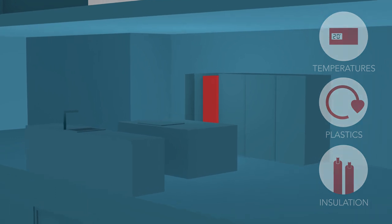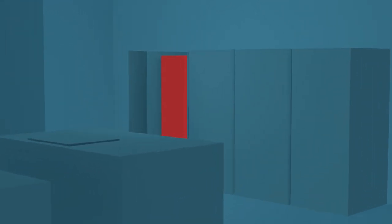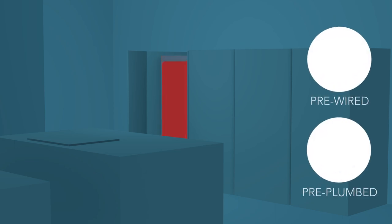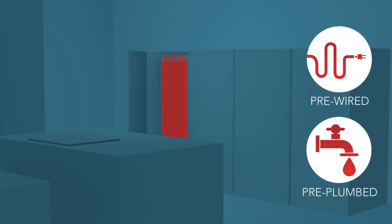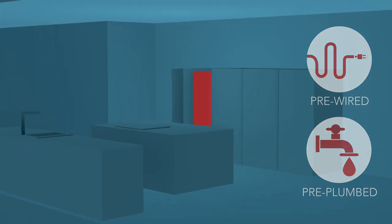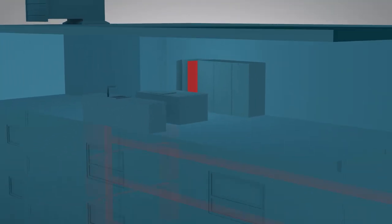The heat pump is compact and typically installed within an apartment cupboard. It is pre-wired and pre-plumbed, reducing construction time on site and maximizing the space available within the apartment.